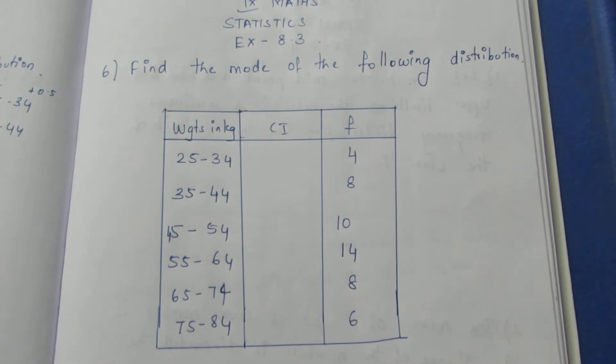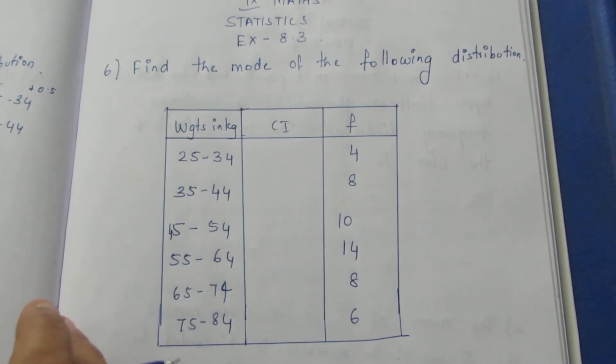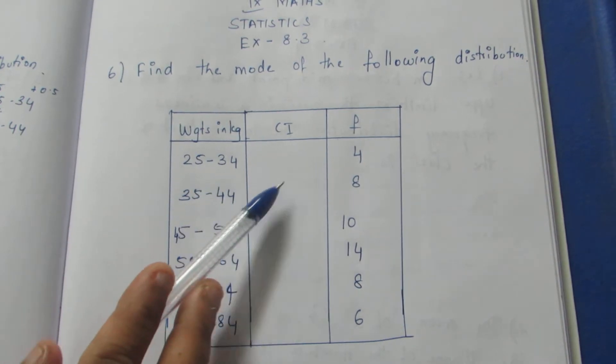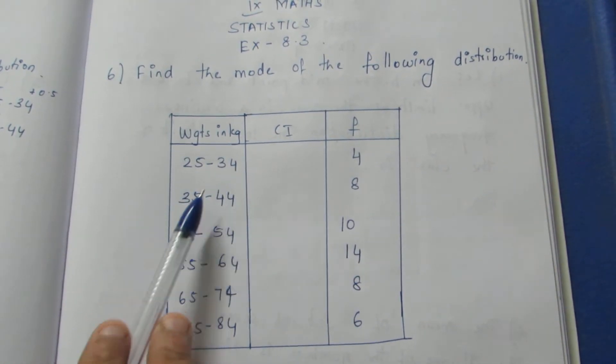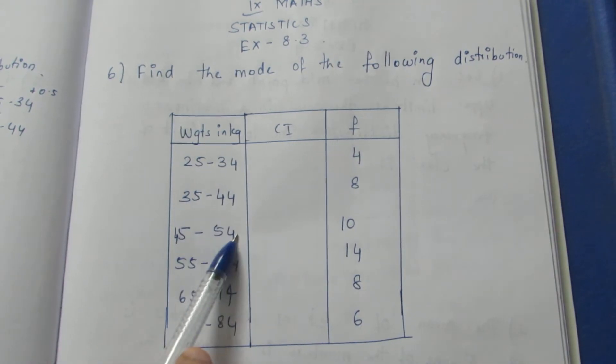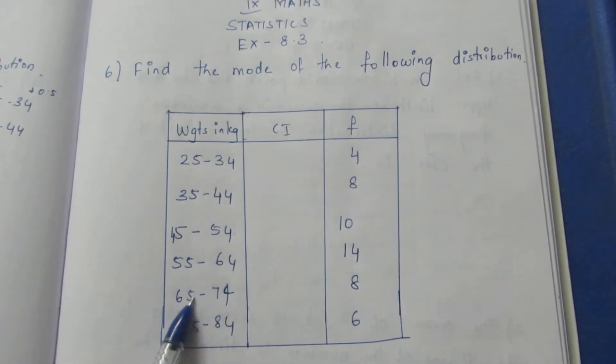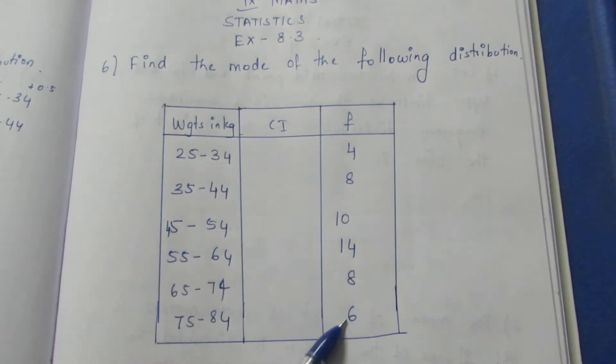Let's put the table in your table. This is not a vertical table. Actually, you have to put a space here. What do you want to say? This is 25 to 34, 35 to 44, 45 to 54, 55 to 64, 65 to 74, 75 to 84. So, this is the frequency.